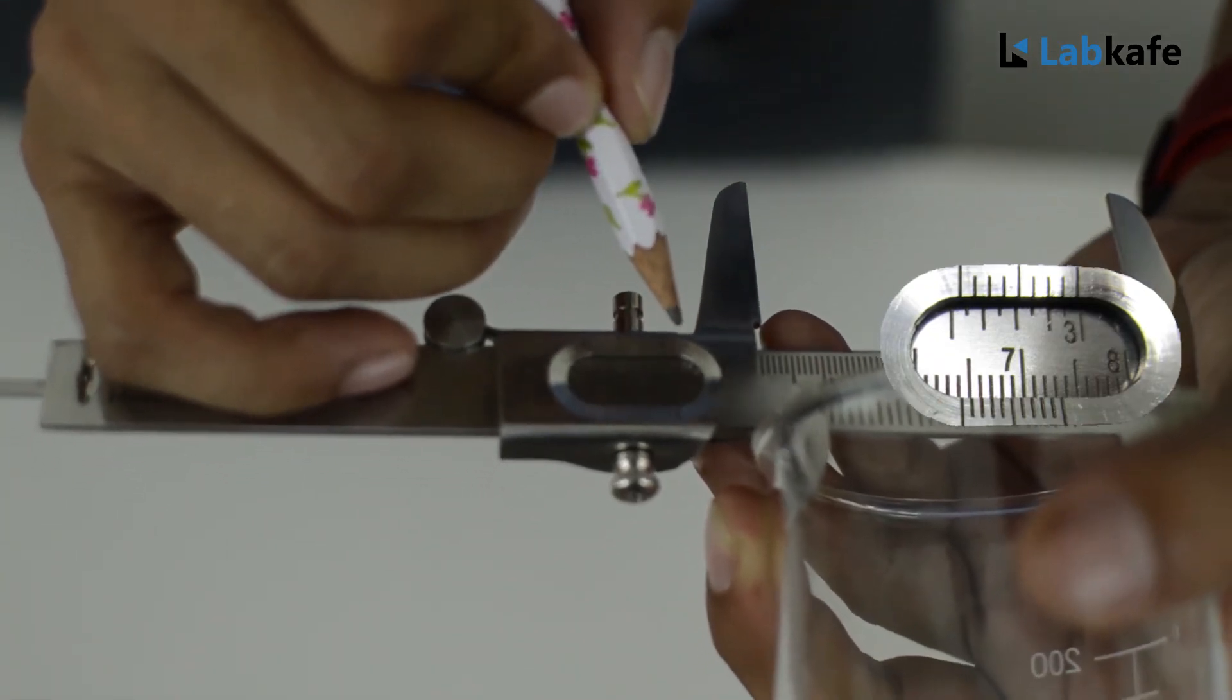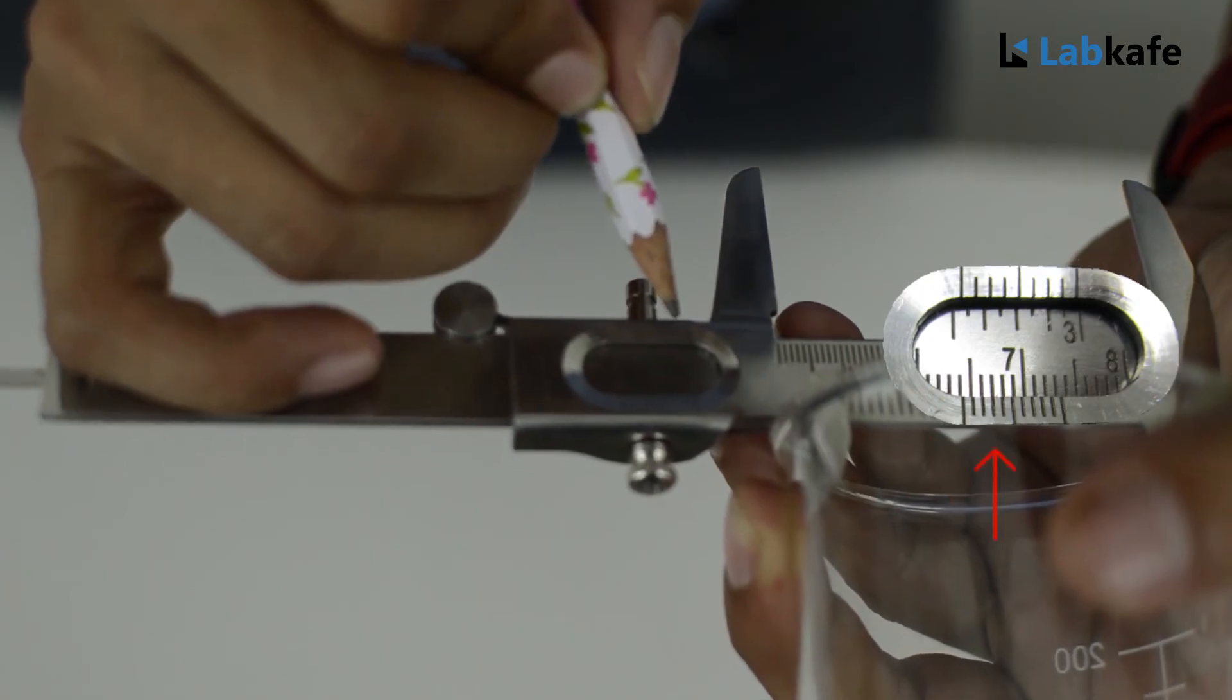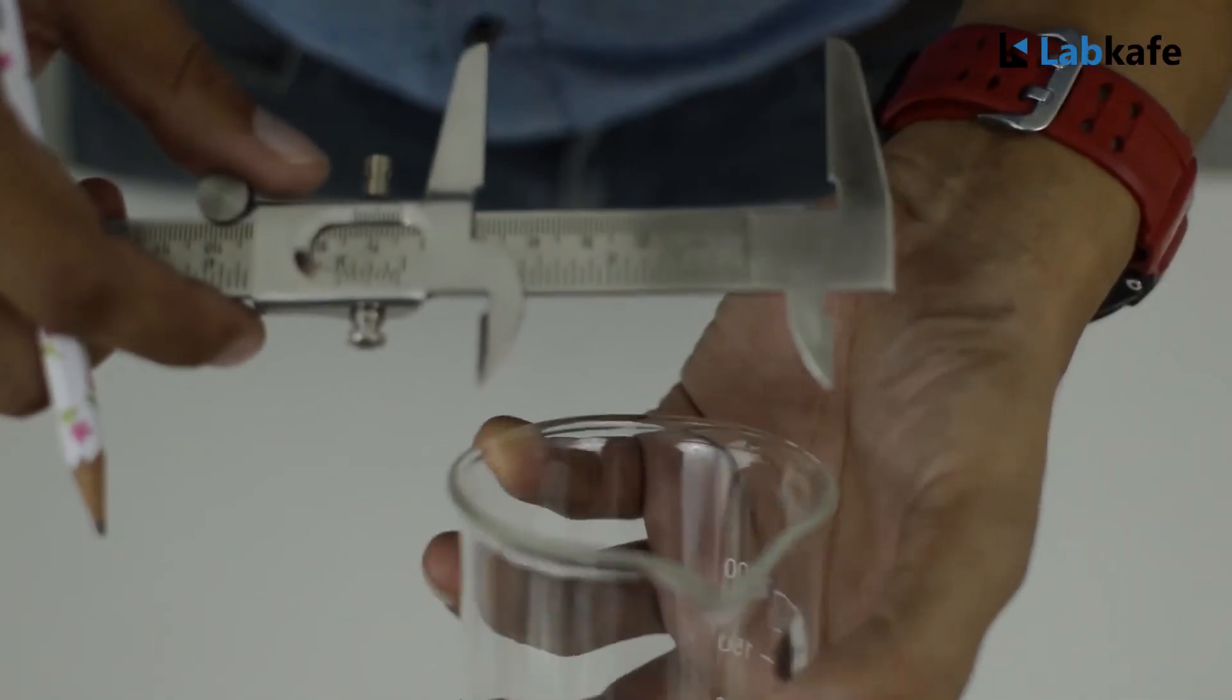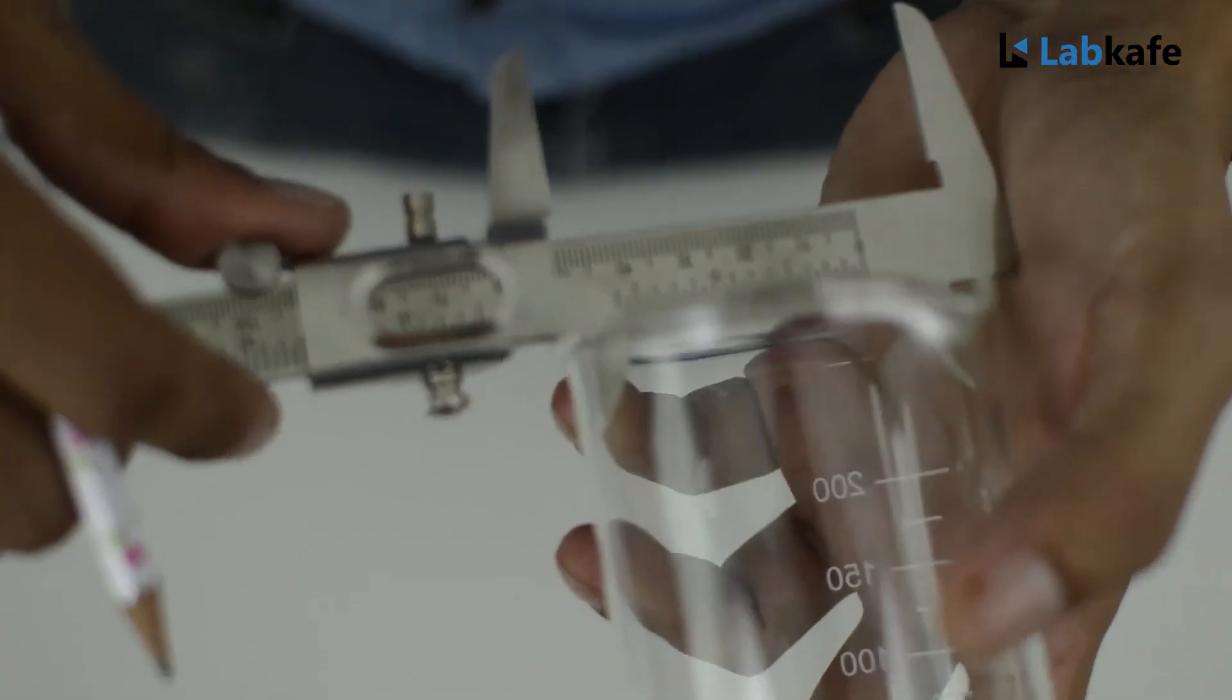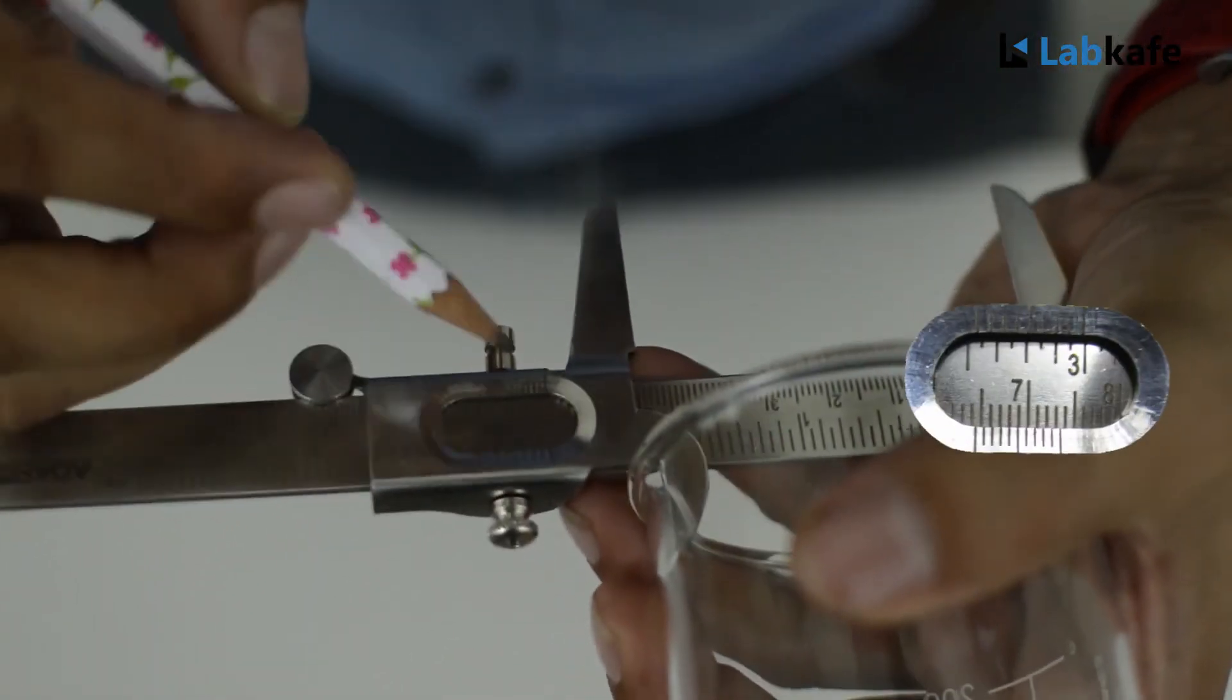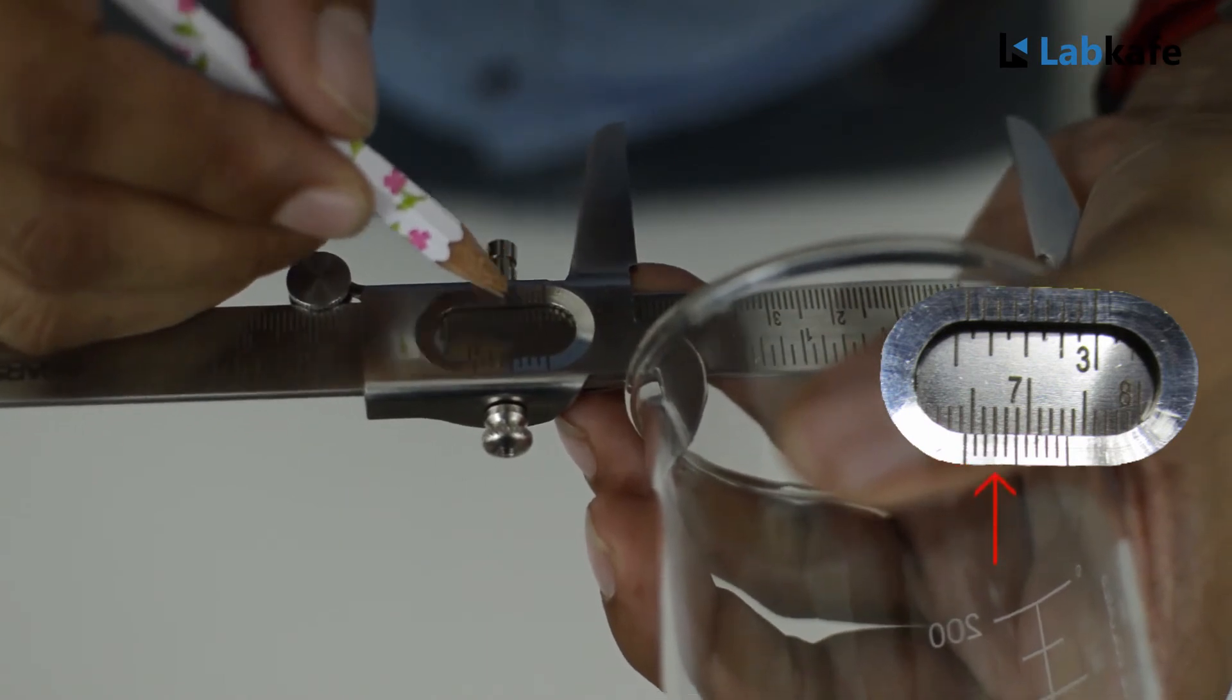We will repeat the same by rotating this beaker 90 degrees and get the same reading. We also see in this case it is 6.4 main scale reading and 3 vernier scale reading.